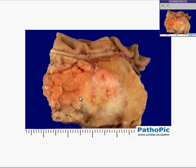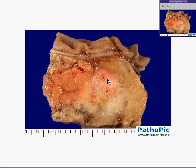But look at this part — it's not lobulated at all. And not only is it not lobulated, but it's very poorly defined from the surrounding normal structures. In other words, it's invading them. And if this, for example, was a common bile duct here, you can see that the tumor has grown completely around it and could very well be completely obstructing it.